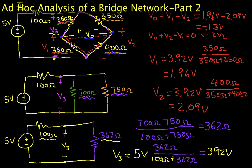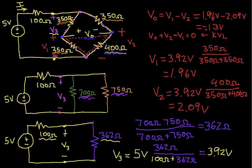Okay, welcome back. This is part two of the ad-hoc analysis of a bridge network. In part one, we used equivalent resistances and voltage dividers to find that the voltage between the two terminals that we labeled V0 is minus 0.13 volts.